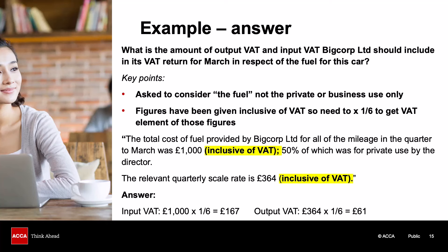The fact that 50% of the mileage was for private use by the director doesn't impact the calculations directly. What it means is that because there is some private use element, HMRC will only allow input tax recovery on the fuel if we are collecting some output VAT and handing it over. So here, as long as we as the business hand over £61 of output VAT, we can claim back £167 of input VAT.